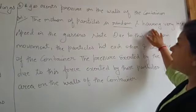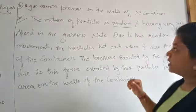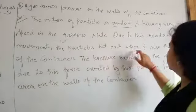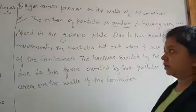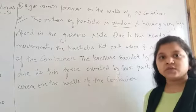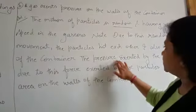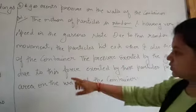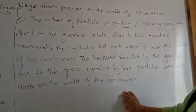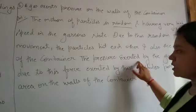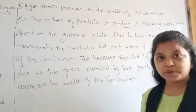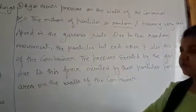Speed is high due to this random movement. Particles hit each other and also the walls of the container. The pressure exerted by the gas is due to this force by these particles per unit area on the walls of the container. Why do we say that pressure is due to force by particles? This is the answer.